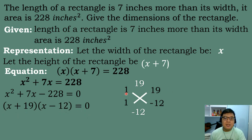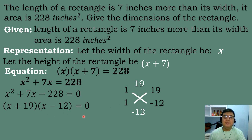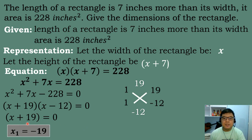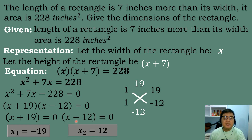So the factors are (x + 19)(x − 12) = 0. Using the zero product property, we equate each factor to zero. For x plus 19 equals 0, transposing gives x equals negative 19. For x minus 12 equals 0, transposing gives x equals positive 12.